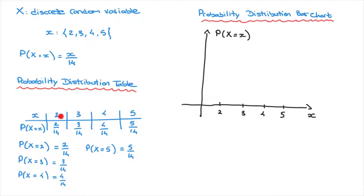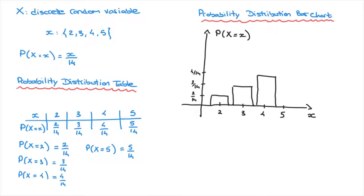We now draw bars whose heights equal the corresponding probabilities. P(X = 2) = 2/14, so we draw a bar up to height 2/14. P(X = 3) = 3/14, so we draw a bar up to 3/14. P(X = 4) = 4/14 and P(X = 5) = 5/14. We draw all four bars and can shade them if needed. That completes our probability distribution bar chart.